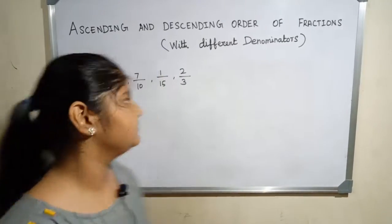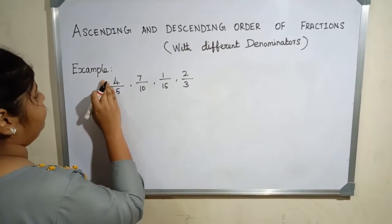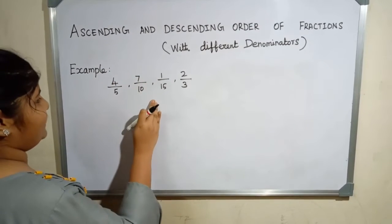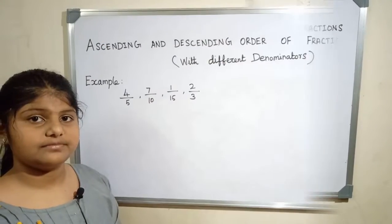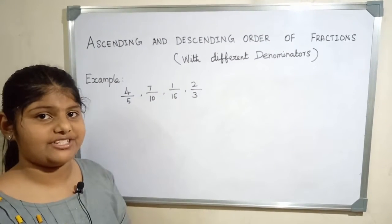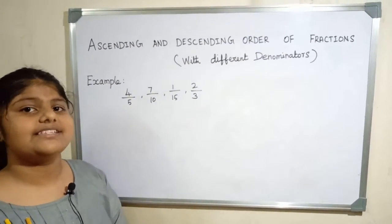Come on, let us see the problem. Here is an example: 4 by 5, 7 by 10, 1 by 15, and 2 by 3. Here the denominators are different. Now we have to convert one fraction into like fraction, that is same denominator. So we have to find the LCM of denominator.